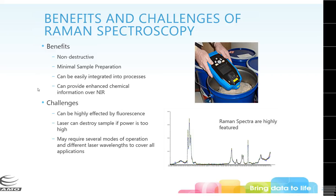Another benefit of Raman is that your spectra are very highly featured, so you can do some analysis directly on the raw data. You don't really need very much pre-processing for Raman data, which is fantastic because you're looking at fundamental vibrations here, as opposed to NIR where you're looking at overtones and combination bands. Looking directly at your data, things stand out more easily without serious pre-processing.